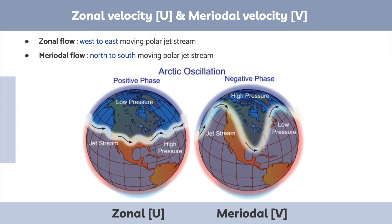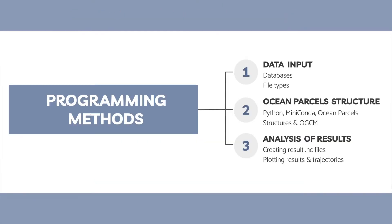Zonal and meridional flows are impacted by differences in pressure. Zonal flow goes from west to east and doesn't have much fluctuation in the way it moves. As for meridional flow, you could say it's a north-to-south moving jet stream since it has a lot of wave-like movement.